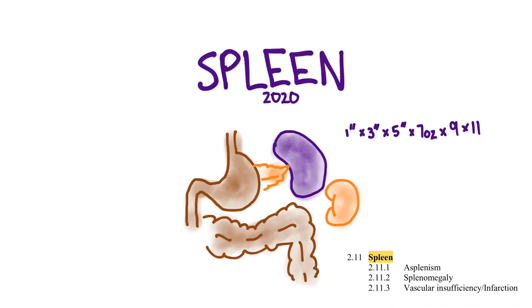And we're covering the spleen because it is part of the EM model. Specifically they only are asking us to look at three things: asplenism, splenomegaly, and vascular insufficiency slash infarction.